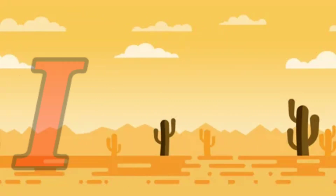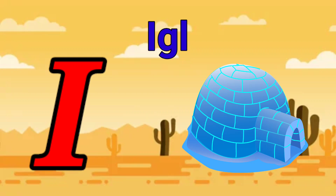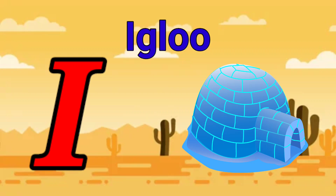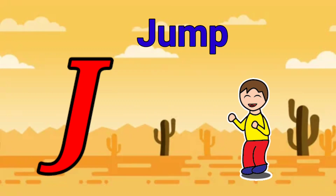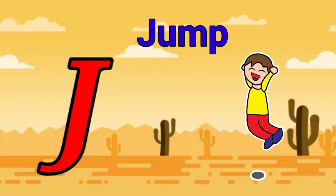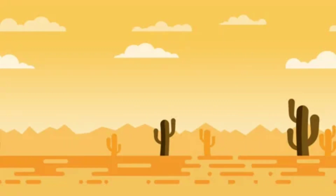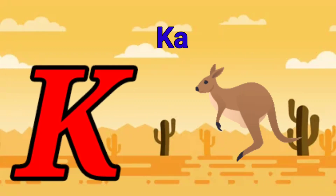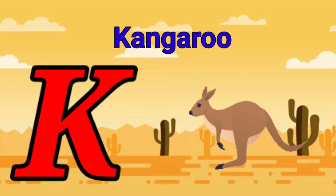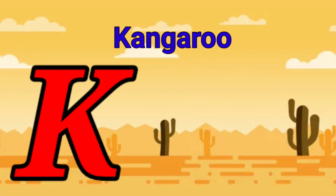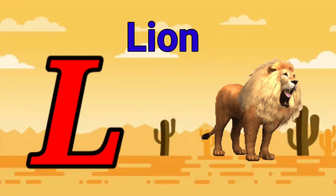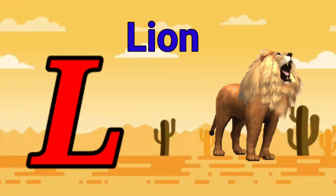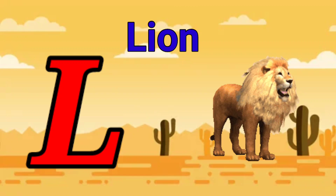I is for igloo, i-i-igloo. J is for jump, j-j-jump. K is for kangaroo, k-k-kangaroo. L is for lion, l-l-lion.